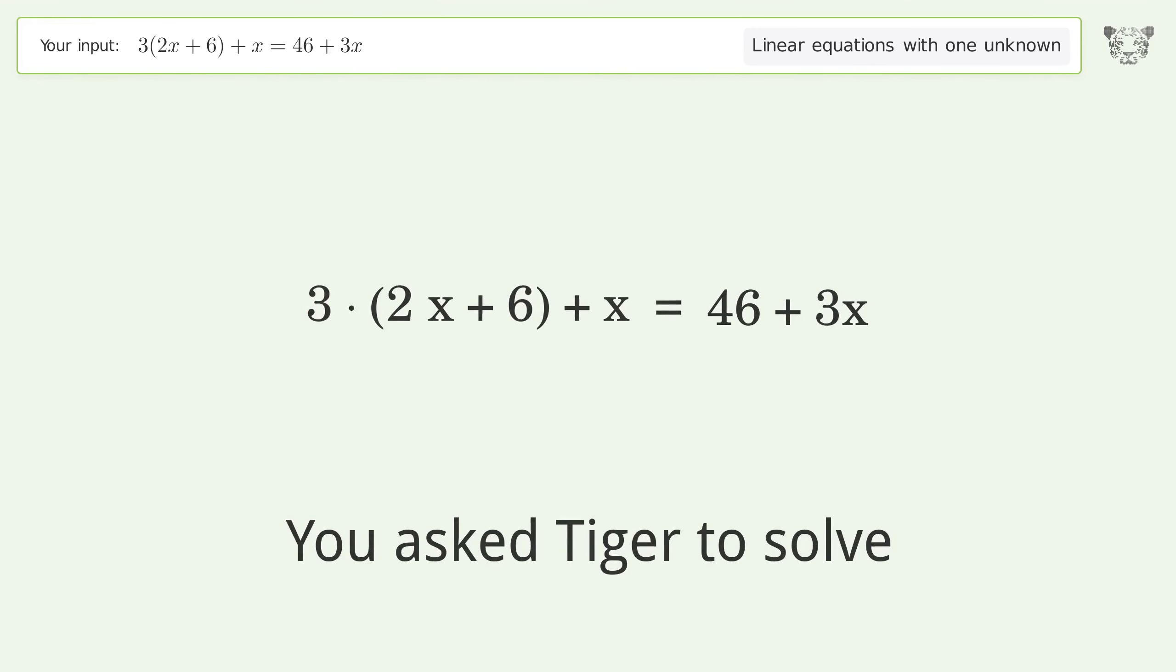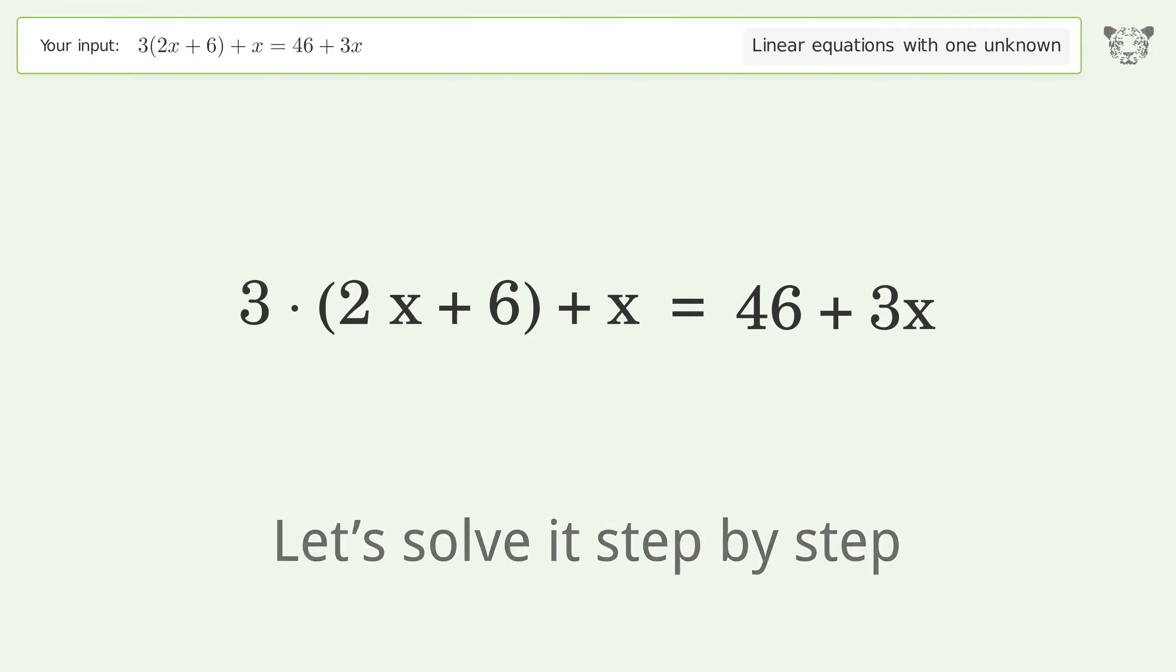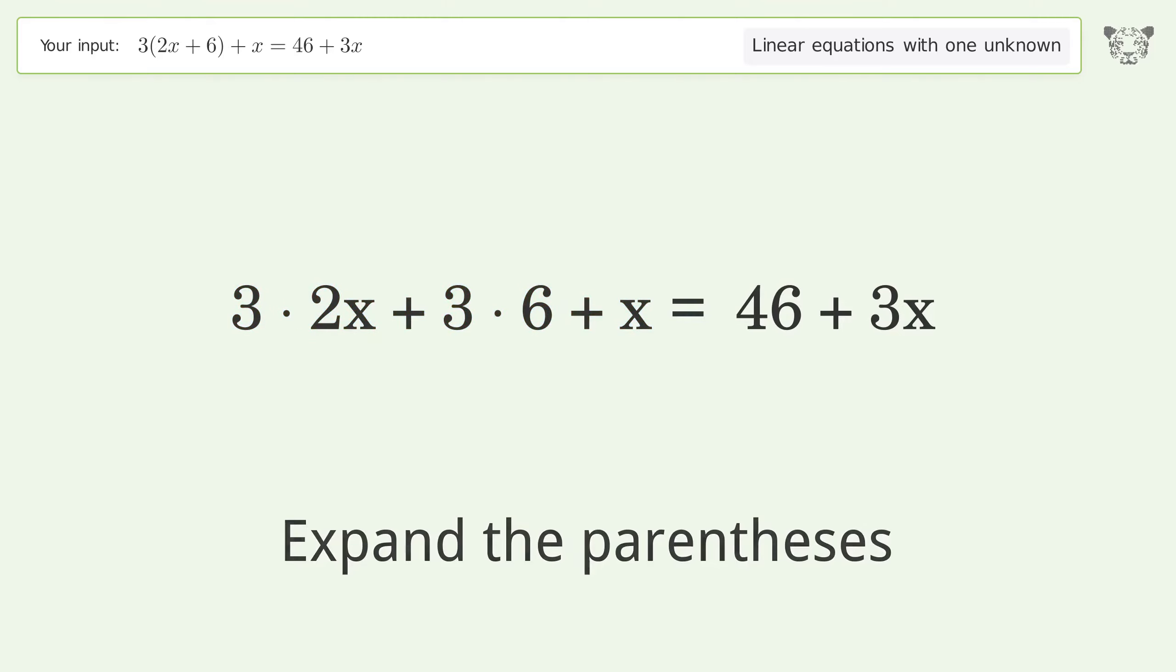You asked Tiger to solve this linear equation with one unknown. The final result is x equals 7. Let's solve it step by step. Simplify the expression, expand the parentheses, multiply the coefficients, simplify the arithmetic.